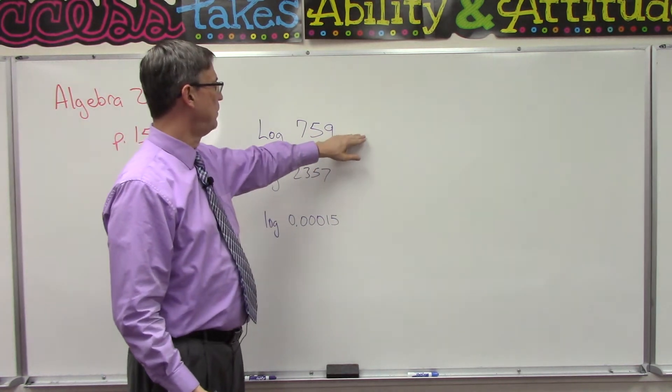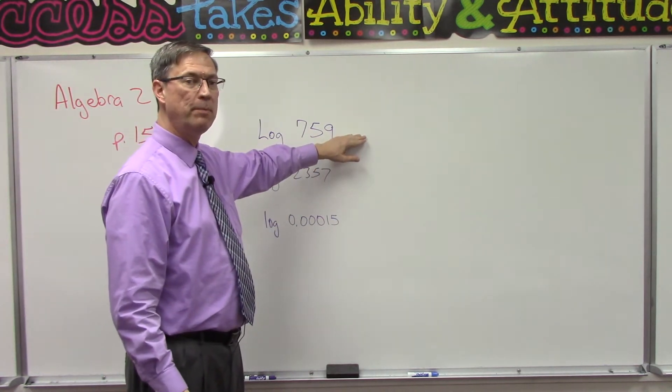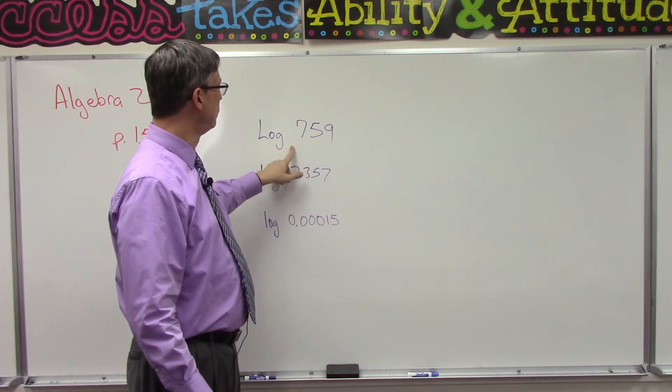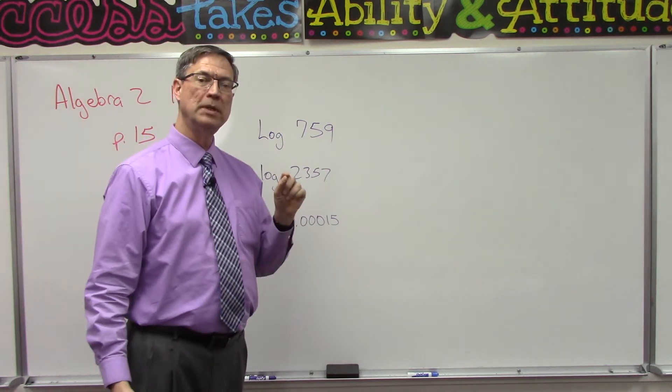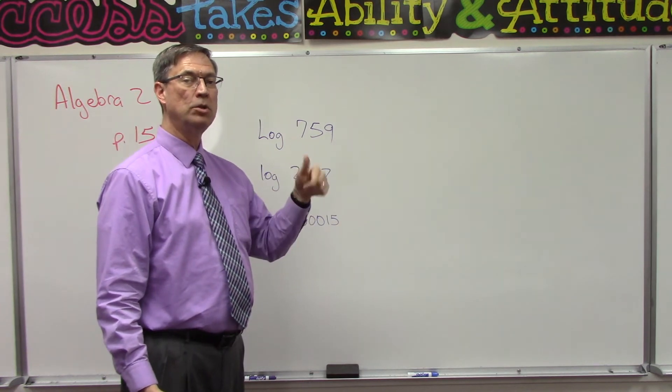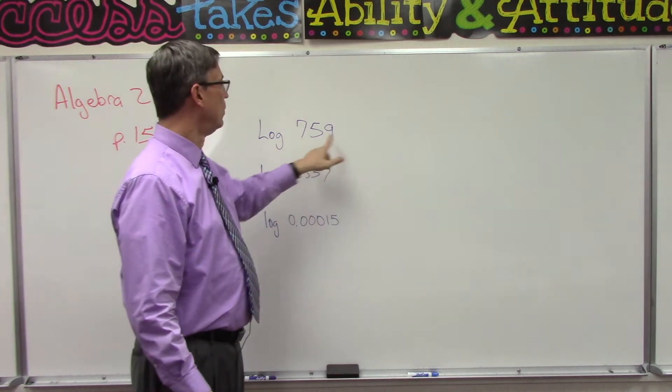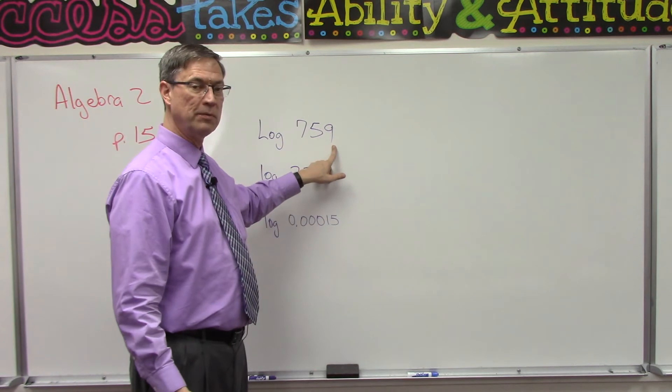When we're trying to find the log here, we're trying to find the exponent. Remember what the base is: if we don't have a base written, then we assume that the base is 10. This would be 10 to what power would give me this number, 759.